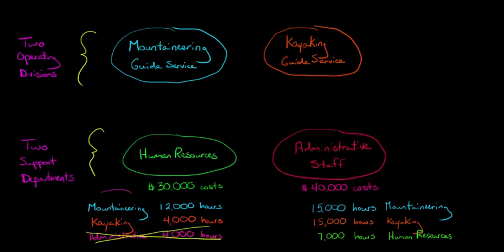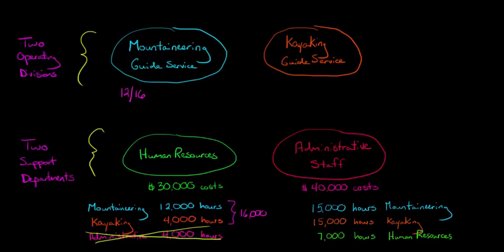So we take mountaineering and kayaking only. Adding those hours together gives us 16,000 total hours. Mountaineering's share is 12,000 divided by 16,000, multiplied by the $30,000 total HR costs. That gives us $22,500. So $22,500 of the $30,000 in HR costs is allocated to the mountaineering guide service.